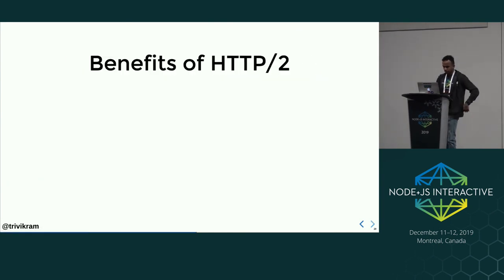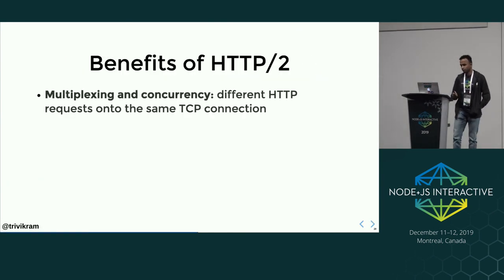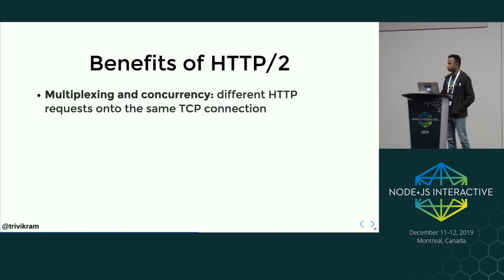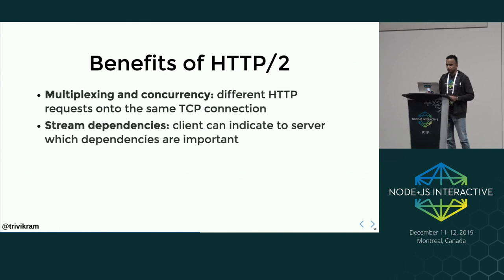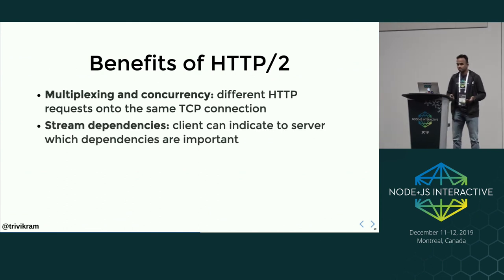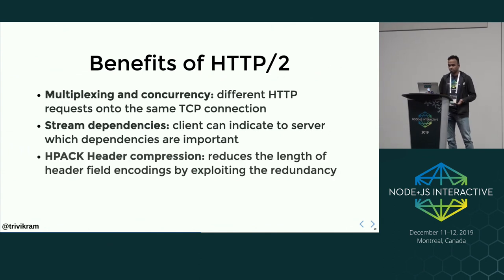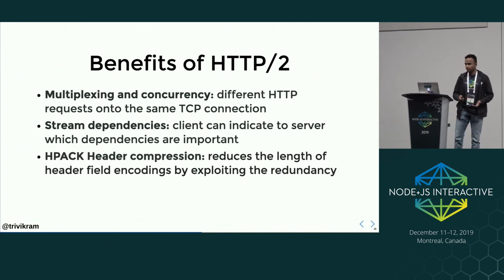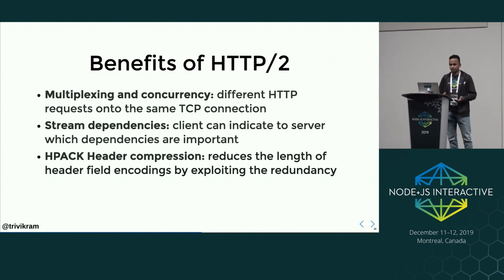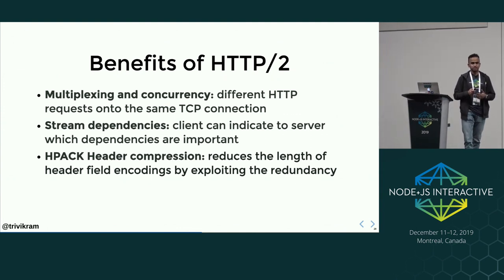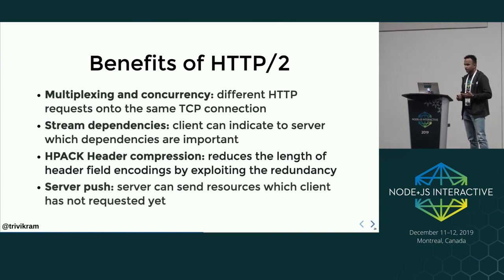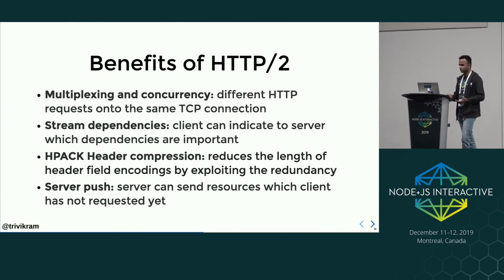Let's see the benefits of HTTP/2. The main benefit is multiplexing and concurrency — different HTTP requests are sent over the same TCP connection. Other benefits include stream dependencies, where clients can indicate to the server which resources are important. There is also HPACK header compression, which reduces header field encoding length by exploiting redundancy. And there is server push, where the server can send resources the client has not yet requested.